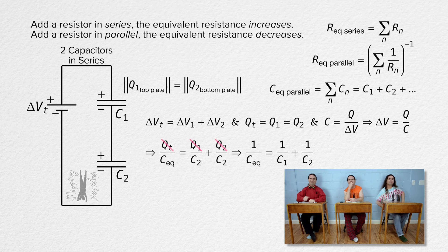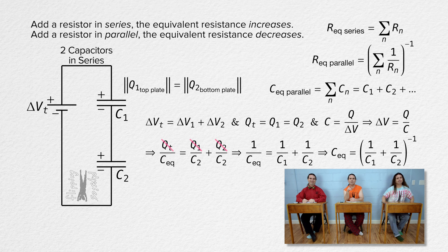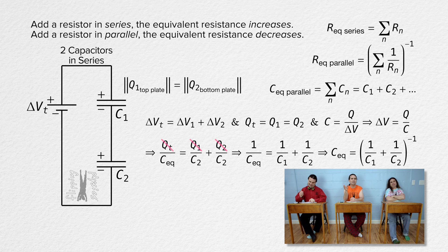That means one capacitor with an equivalent capacitance of two capacitors in series equals the inverse of the sum of the inverses of the capacitance of the two series capacitors.